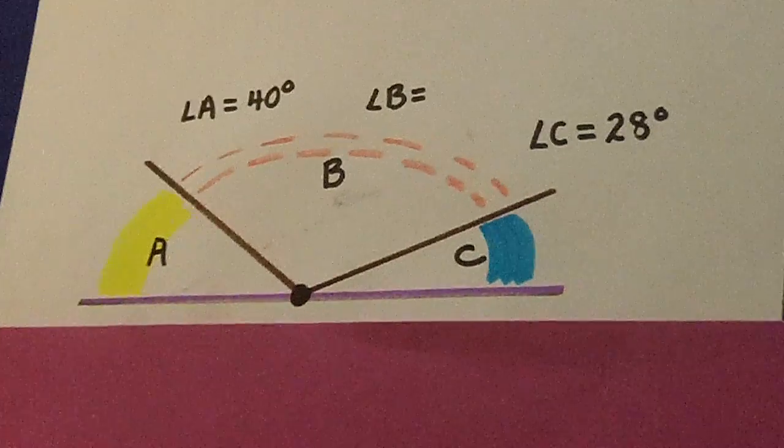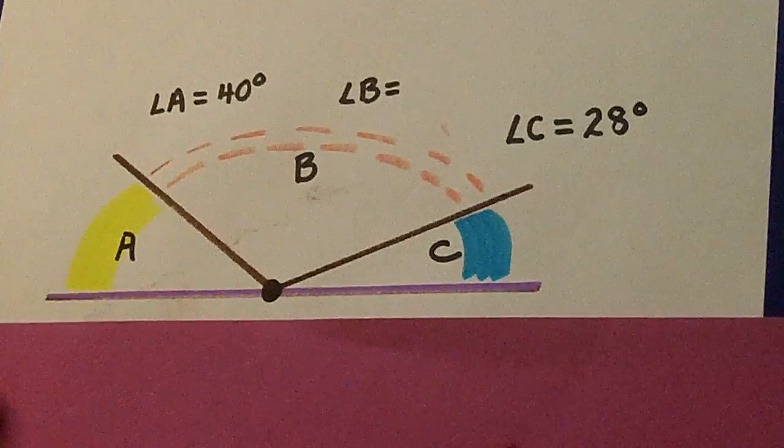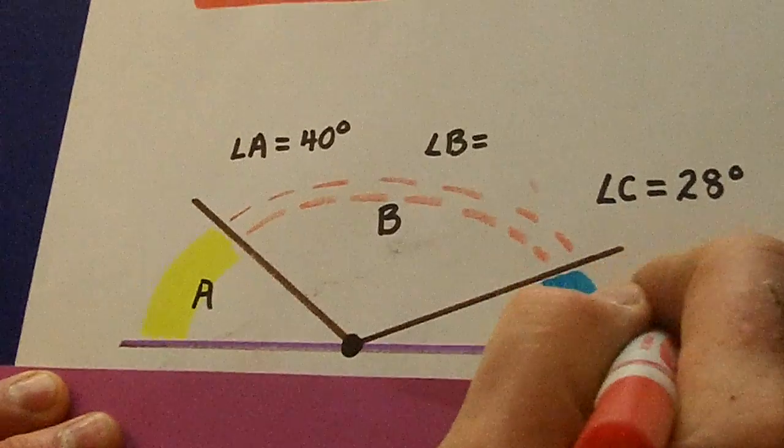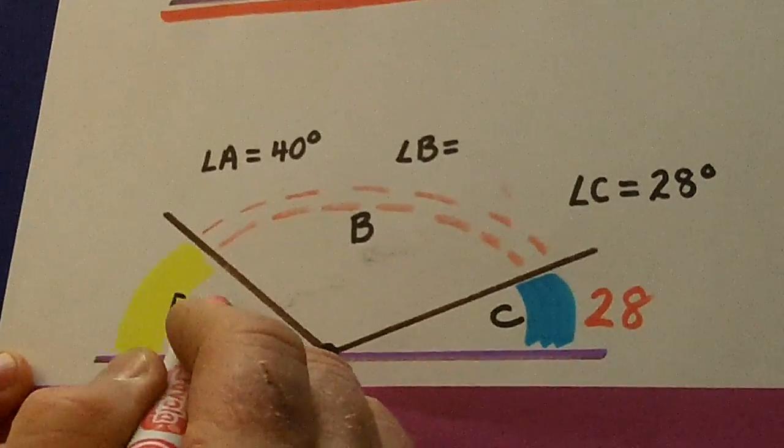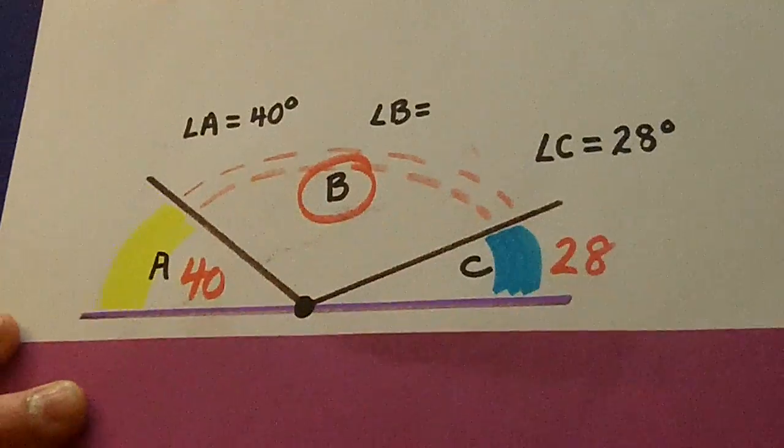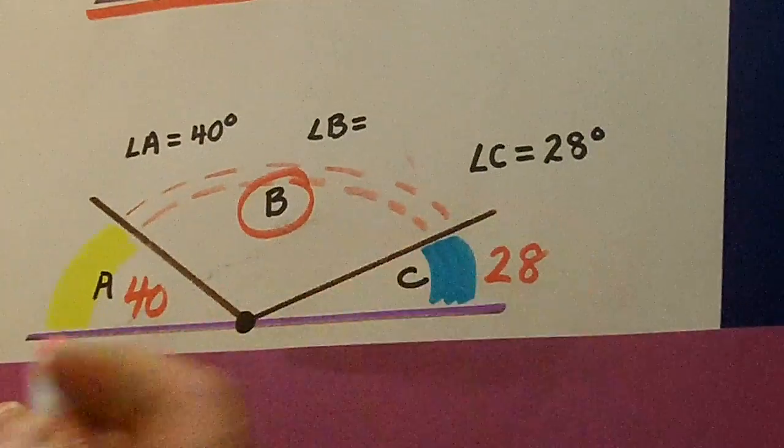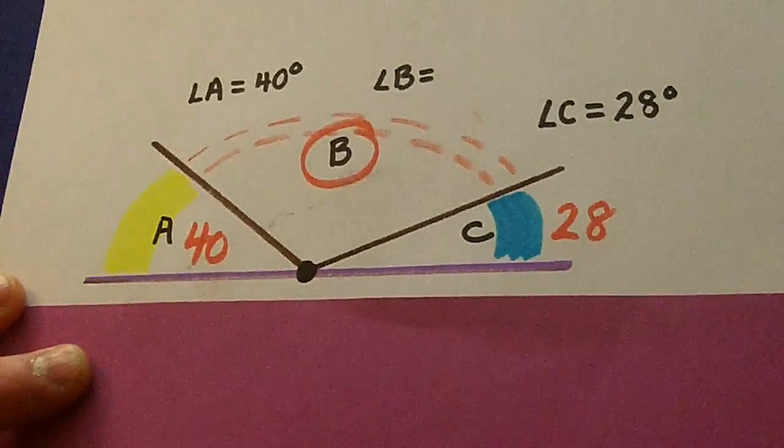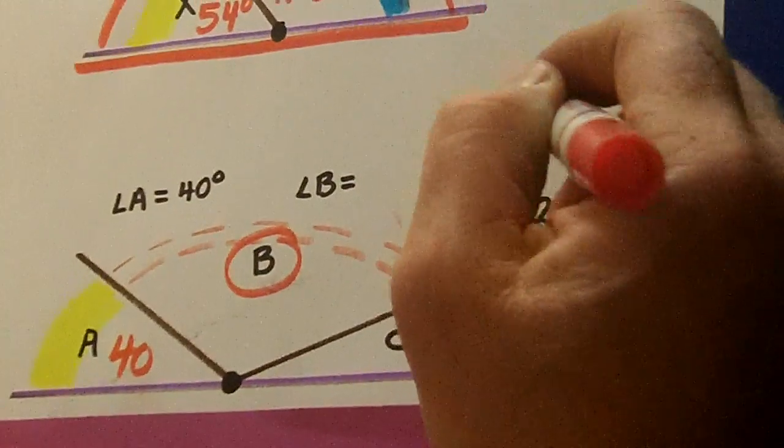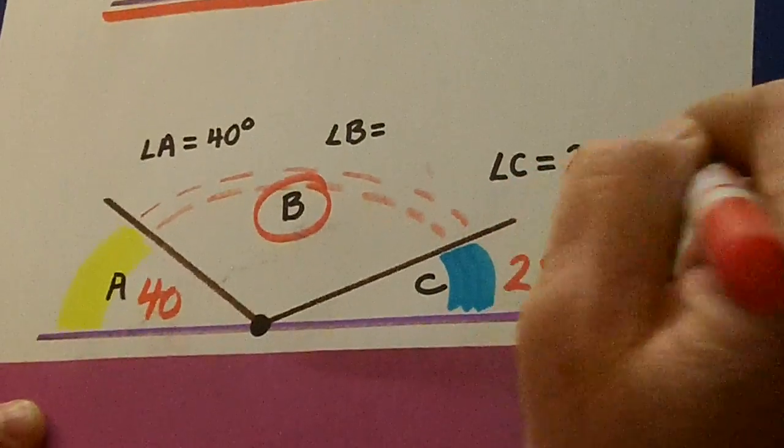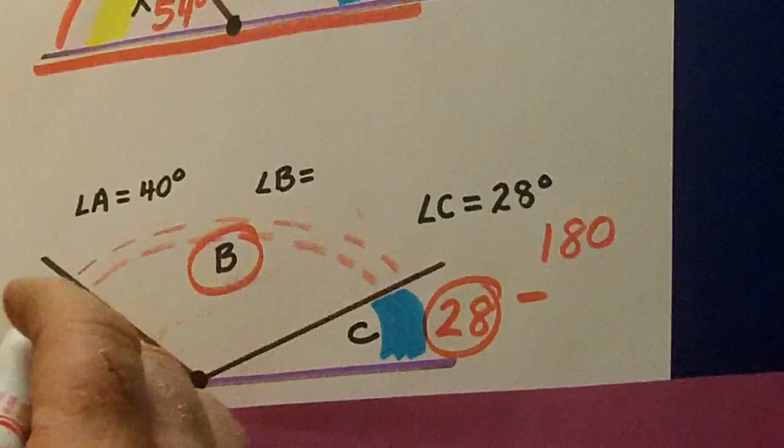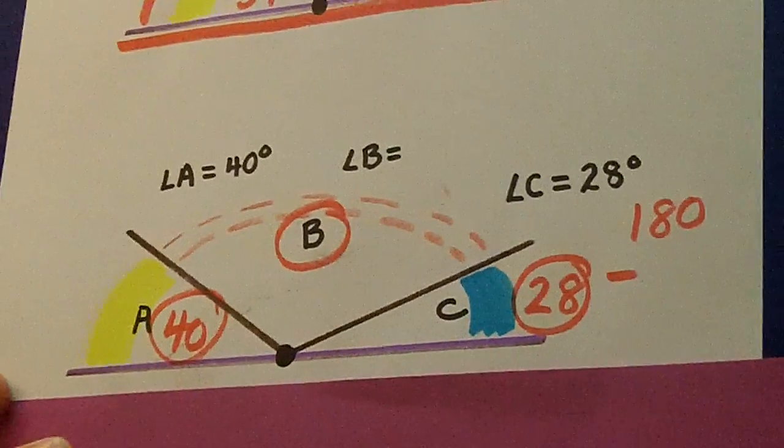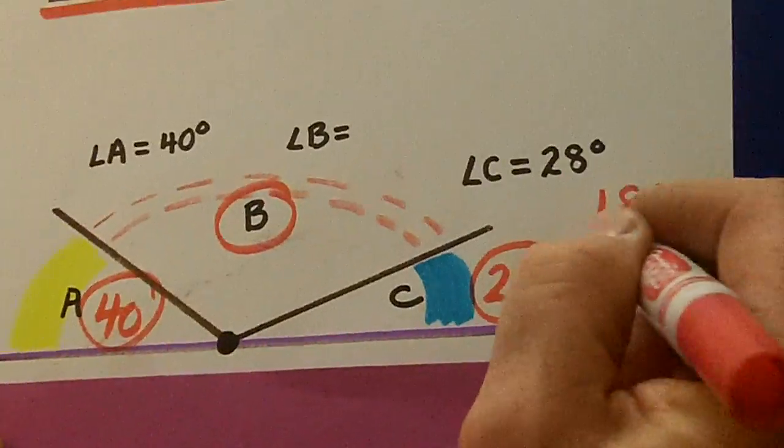Down here. Three supplemental angles. C is 28. A is 40. But we don't know B. Now B looks pretty big. So how might we find this? Well, we take 180 degrees and we're going to subtract what those two add up to, which is 68.